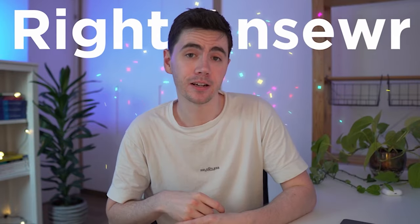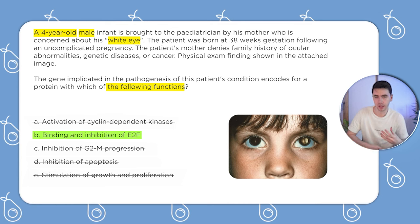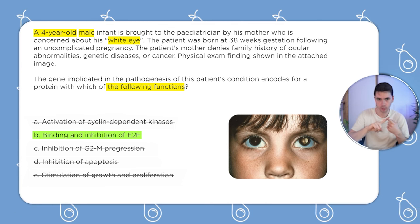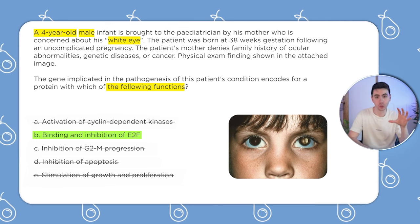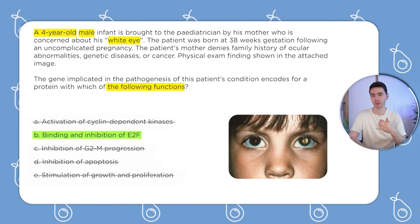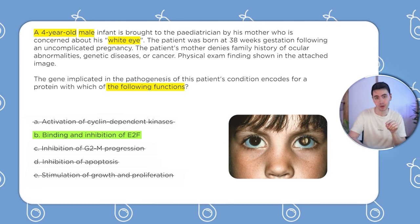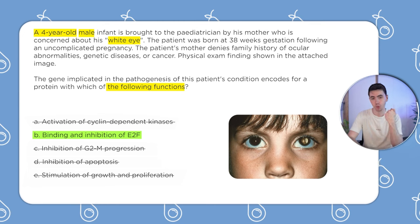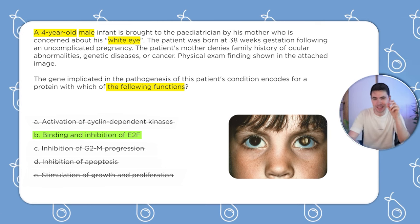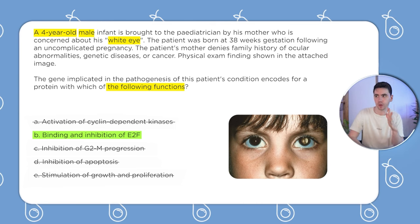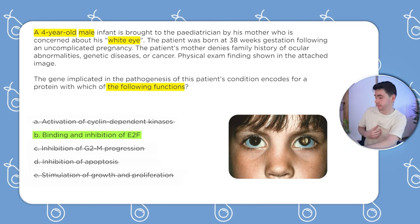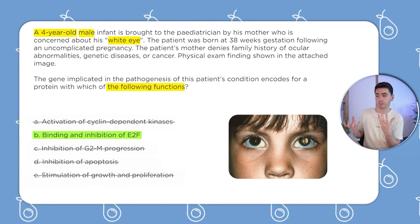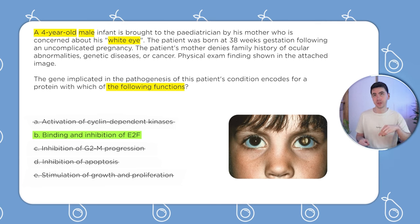Now that we have our right answer, how do we actually learn from this practice question so we can get the correct answer on exam day? If you remember from the previous video, my two-step method: first, understand what went wrong; second, review and re-review that content moving forward using what I call the spiral learning method — a continuous process of doing practice questions and looping back to re-review material in First Aid, doing Anki cards, and doing more and more practice questions. Reviewing and re-reviewing means you're spending time on the most high-yield material.